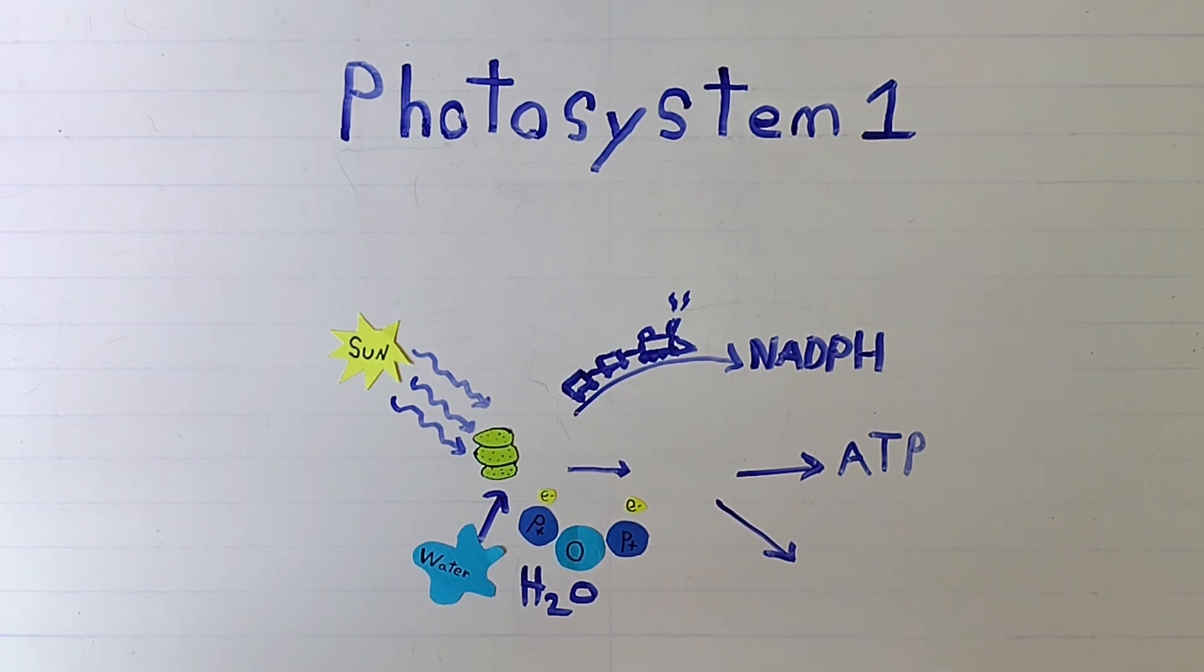When sunlight hits the chloroplasts on a plant, the electrons stored in water become excited and are picked up by electron acceptors, which form the electron transport chain, which produces NADPH, a molecule used in photosystem 2 to transport energy between reactions.